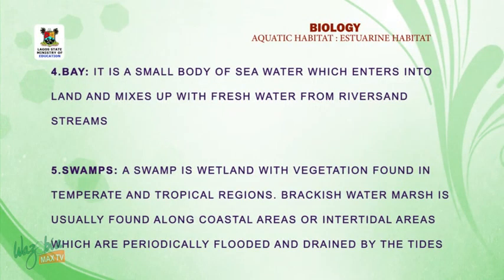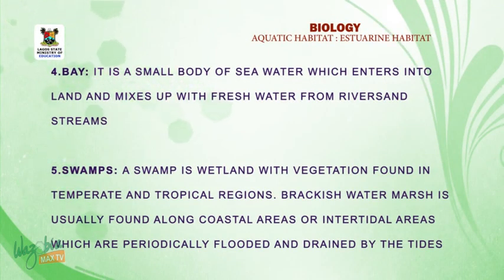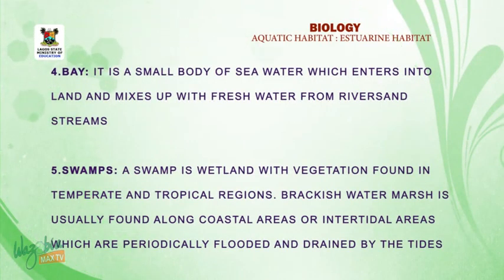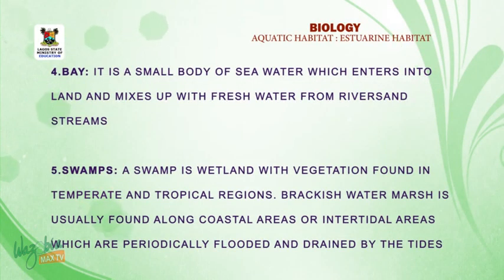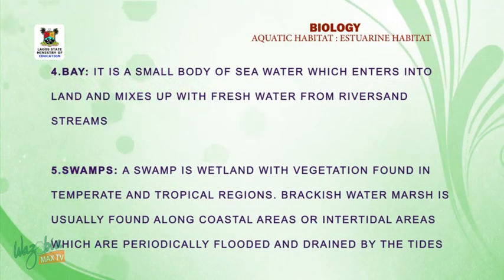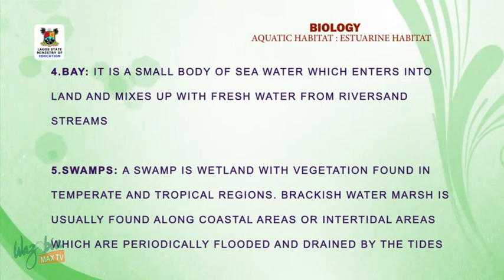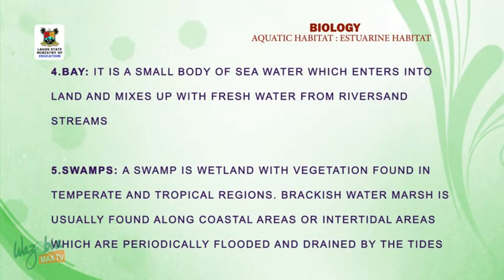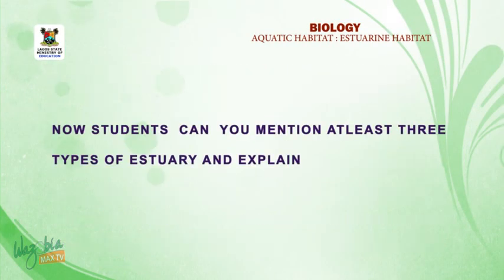Number four: bay. A bay is a small body of water which enters into land and mixes with the fresh water from rivers and streams. Number five: swamp. A swamp is a wetland with vegetation found in temperate and tropical regions. Brackish water marsh is usually found along coastal or intertidal areas which are periodically flooded and drained by the tides.